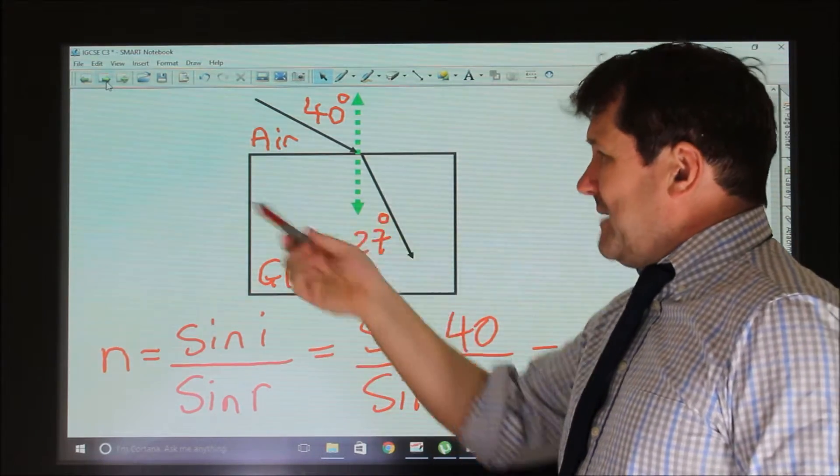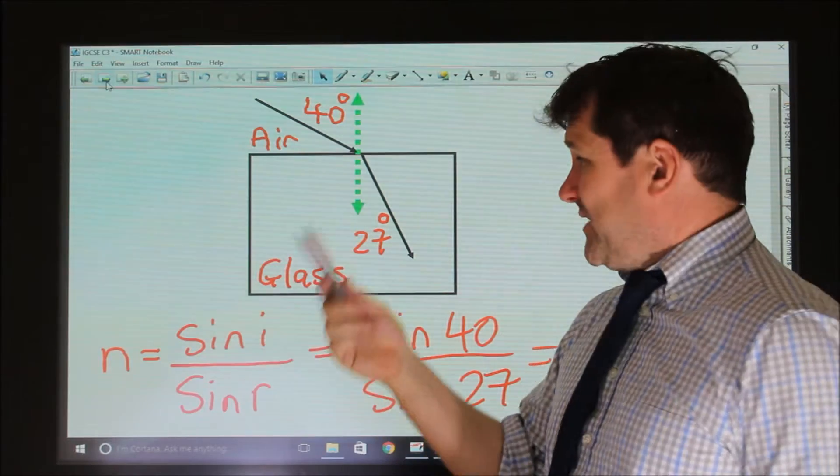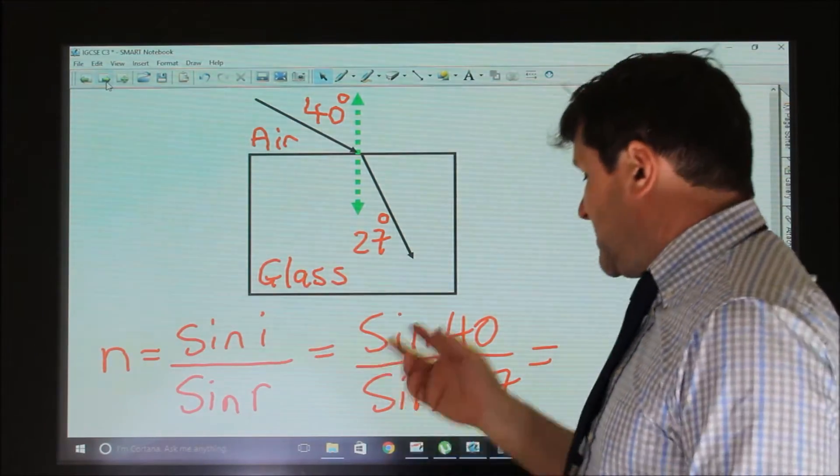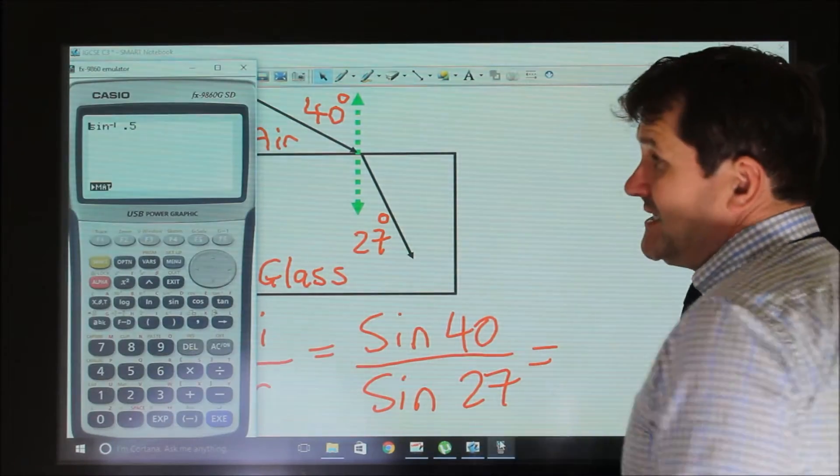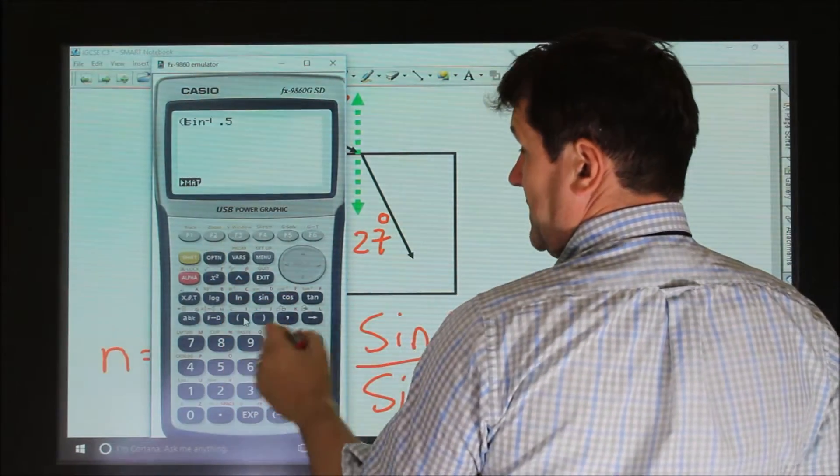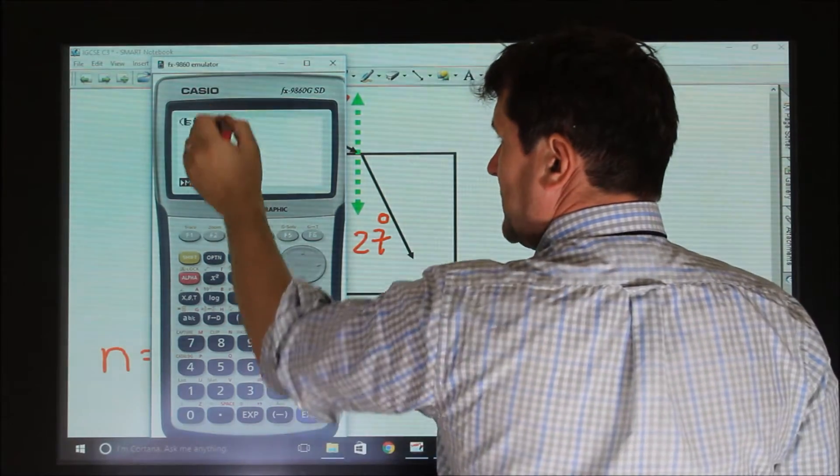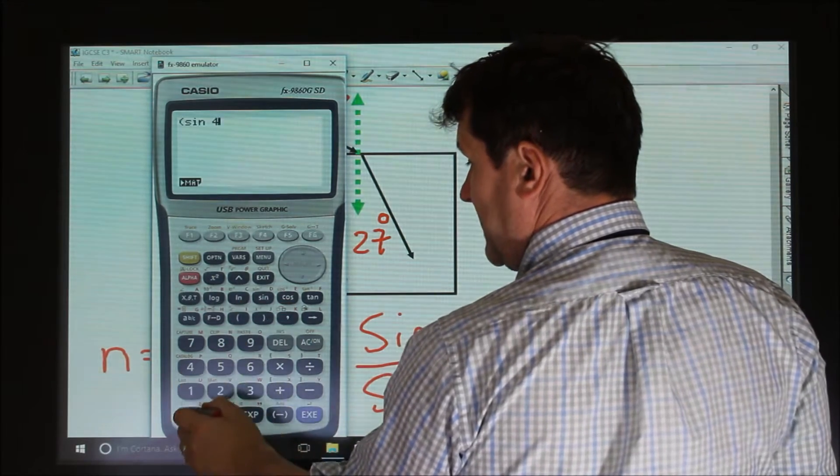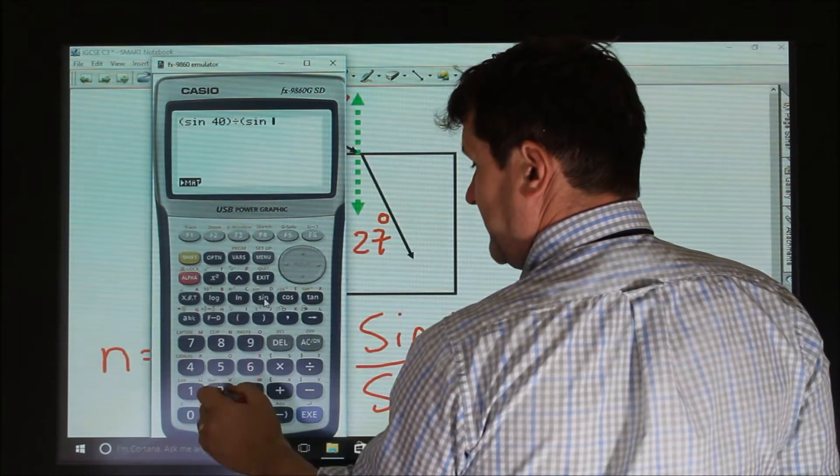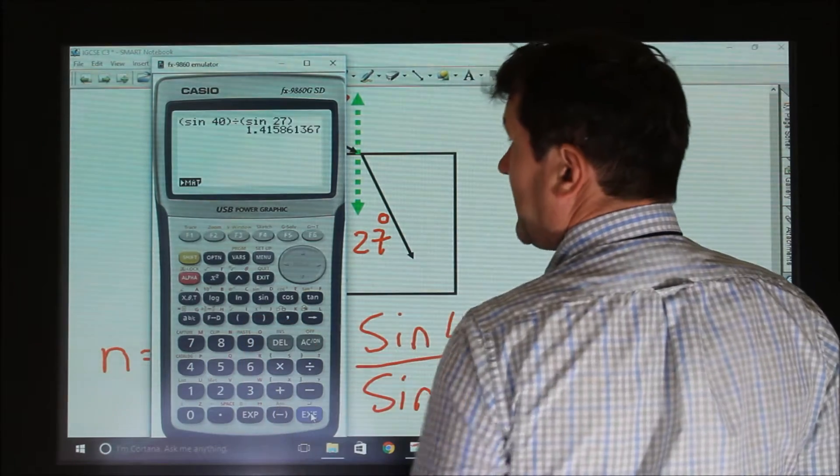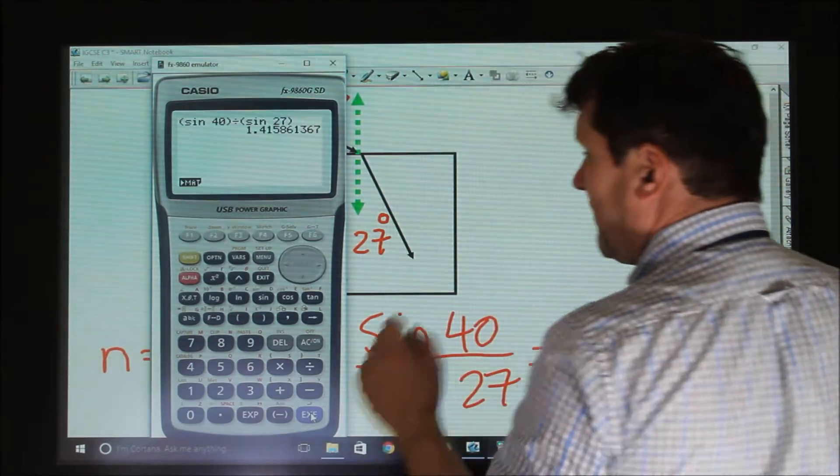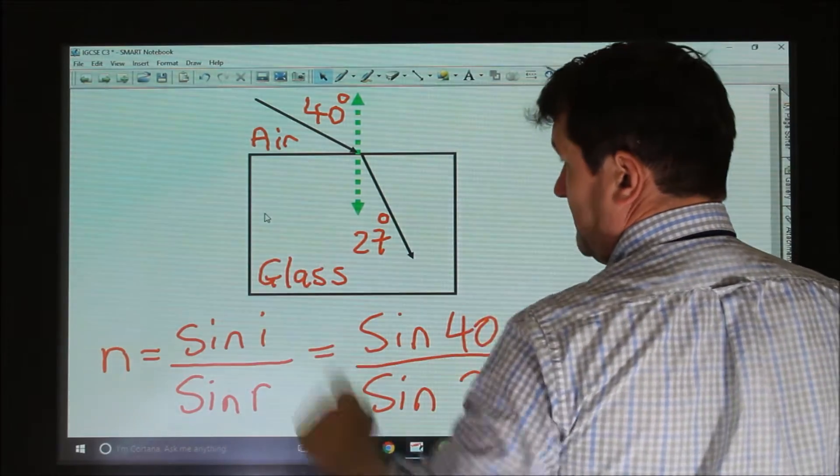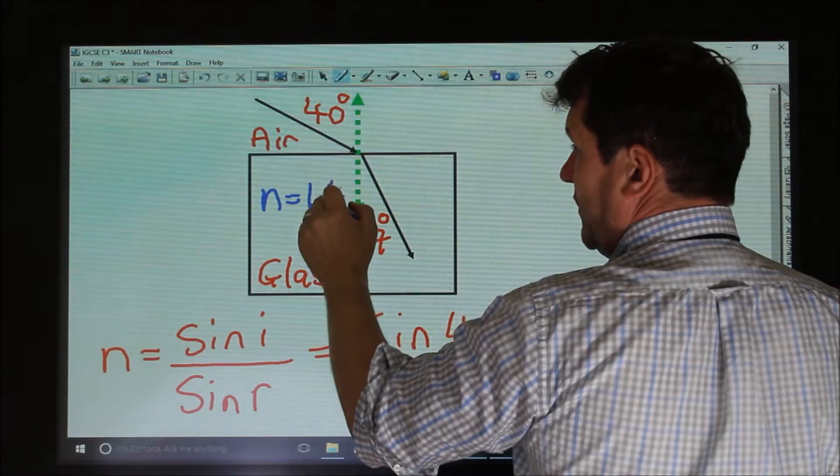Now we can mathematically model this and calculate the refractive index of the glass by saying the refractive index is sine I divided by sine R, which is sine 40 divided by sine 27. So sine of 40 divided by sine of 27 equals 1.41. So the refractive index N equals 1.41.